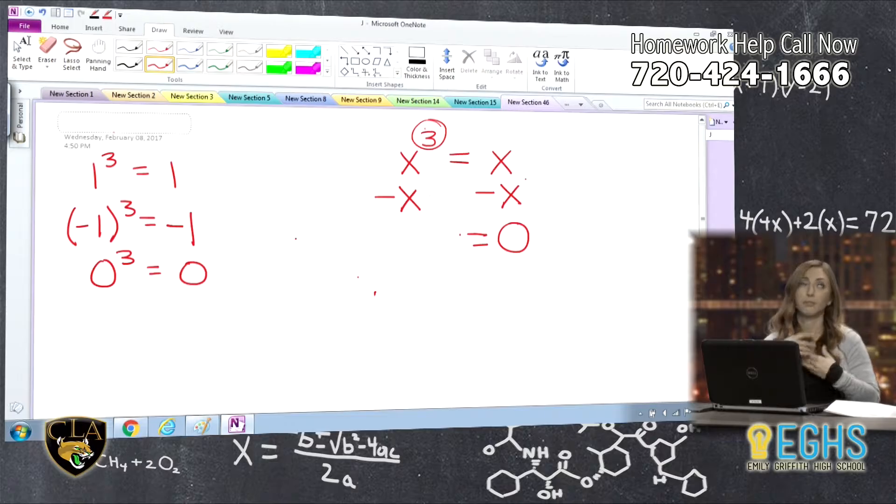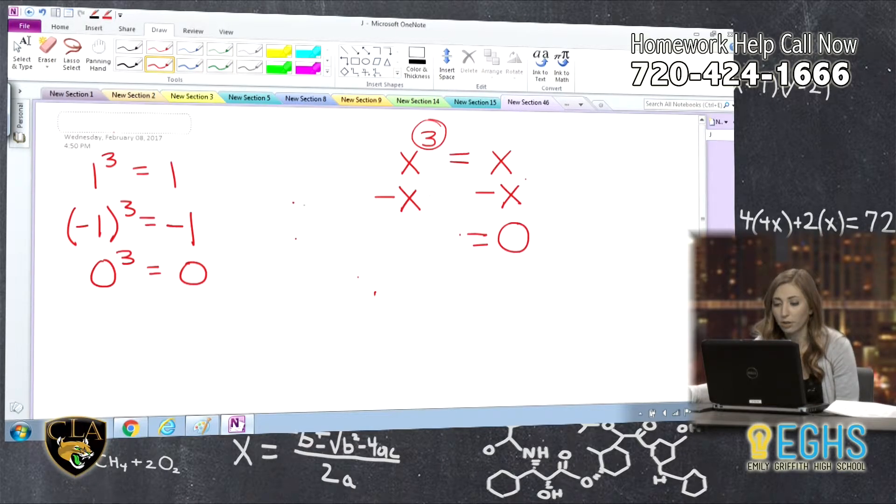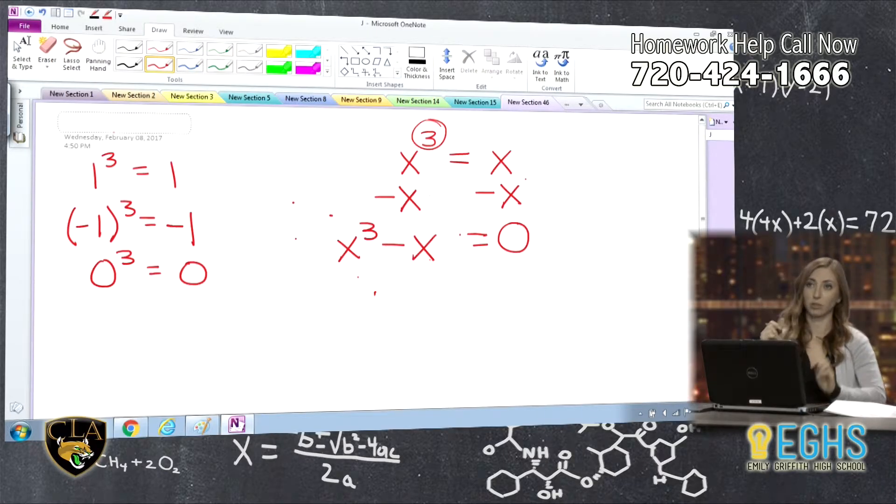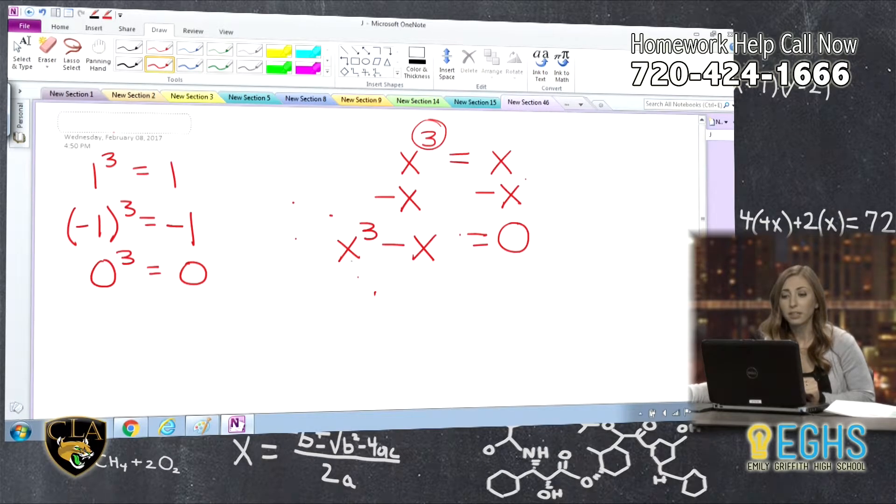So what I started doing is I subtracted X from both sides because I'm setting this equal to zero. A lot of times when you're solving equations with higher powers, second power, third power, fourth power, this is a really good strategy to use if you are solving these types of equations. So then on the left side I have X³ minus X, which they're not like terms so they don't combine.